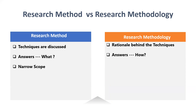In research methods the work has a narrower scope — we narrow down our entire research work into a small focused area. Whereas in research methodology you have a wider scope, meaning in a broader way we put all the methods and techniques together and check what the best options are in our work. That's why we say wider scope.